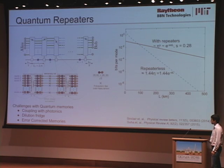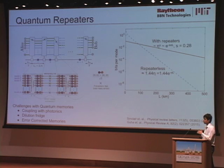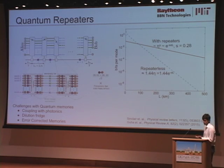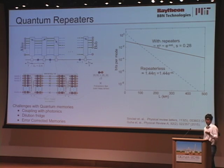This protocol, originally from Wolfgang Tittel's group, was analyzed in detail by Saikat Goha and collaborators, accounting for losses and dark counts. They found such a protocol can beat the repeaterless bound. Although the scaling remains exponential, the exponent is improved: the QKD rate now scales as eta^s where s can be less than one. For their choice of parameters, s equals 0.28, and at 1000 km you can achieve roughly one kilobit per second — a practical rate, compared to one bit every 2000 years.